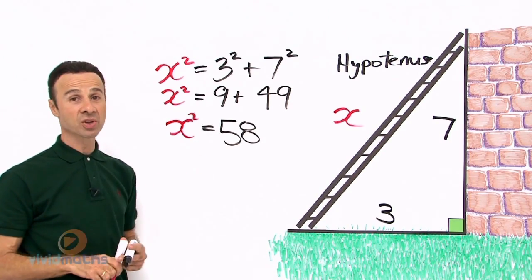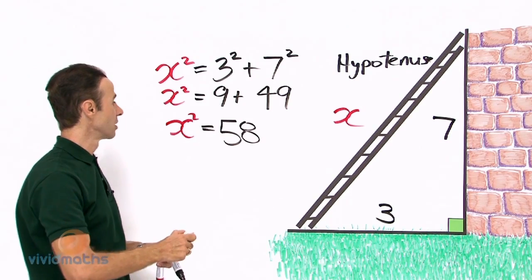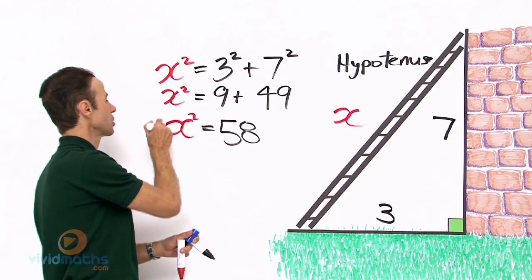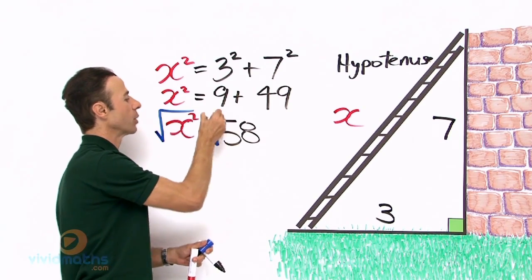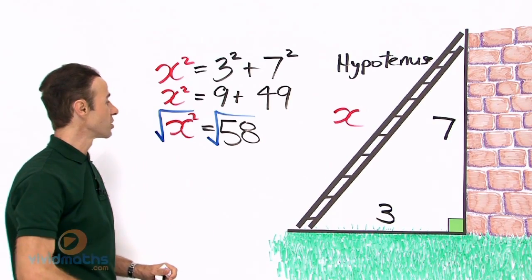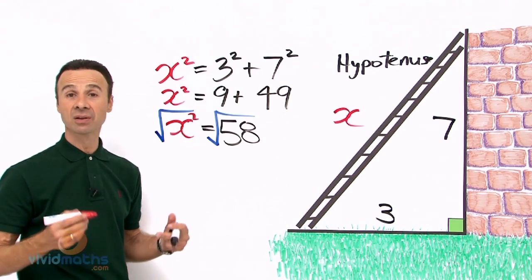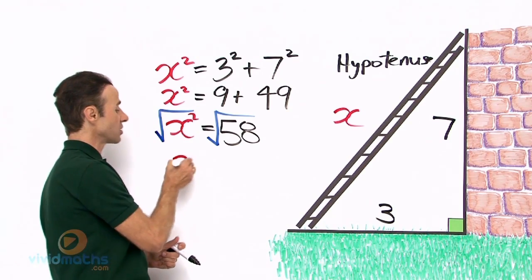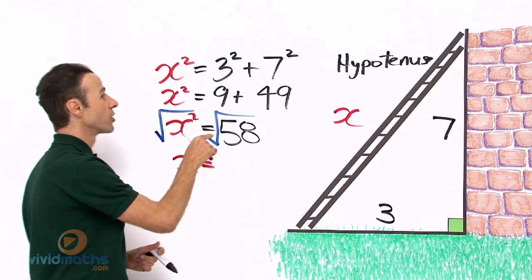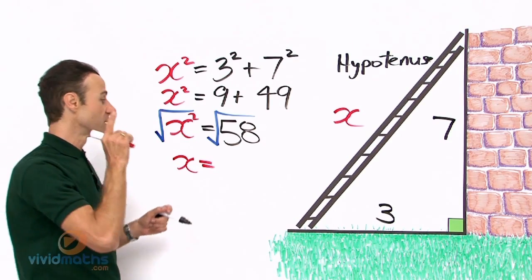Okay, we square root both sides so we can find x by itself, because we do not want x squared, we just want x. Square root to the left hand side and we also square root to the right hand side of the equal sign. So when we square root x squared it reverts back to being just x. So that is just x and that equals the square root of 58 on your calculator is 7.62.